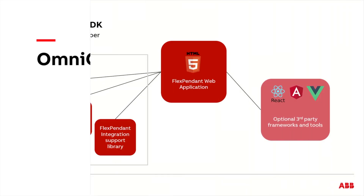Now, let's take a look at the Omnicore App SDK, which makes life a bit easier as an app developer. As mentioned earlier, a web app is developed using standard web technologies. It is also possible to use most generic third-party frameworks and tools available from the web development community. While not strictly required, the Omnicore App SDK provides three main areas of support for the developer.